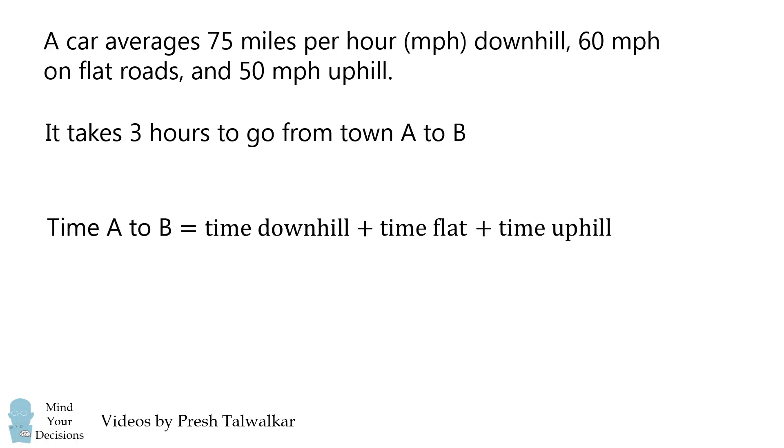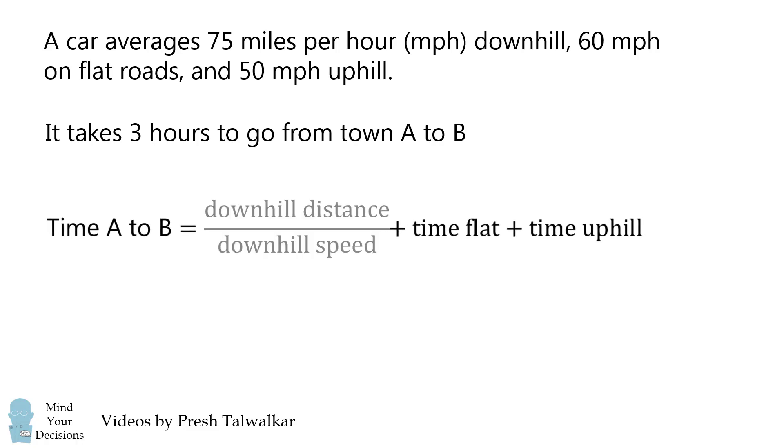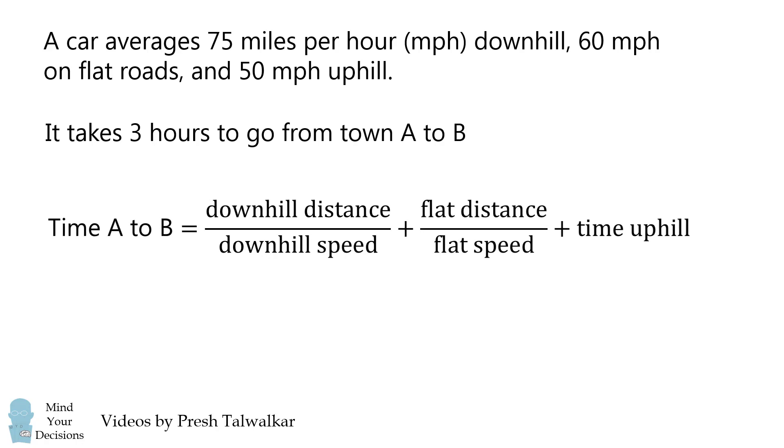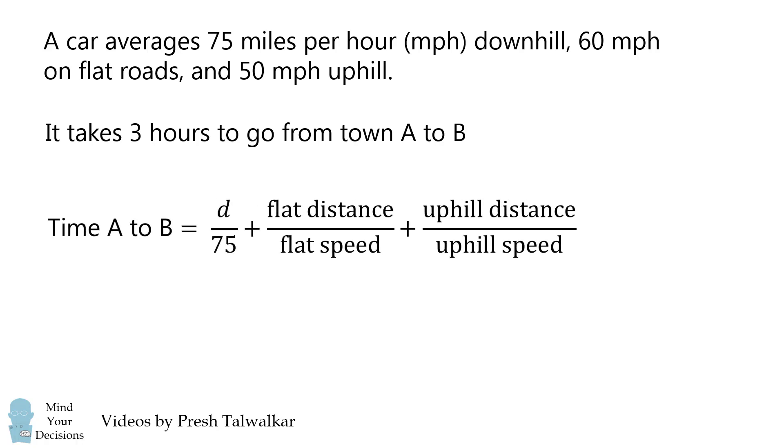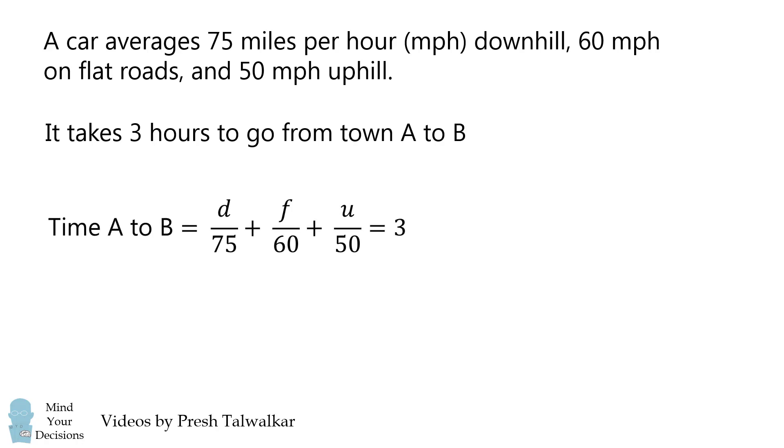We can express each of these times as the ratio of the distance divided by the speed. We can then substitute in the downhill, flat, and uphill speeds which are given in the problem, and we'll let the distances be denoted by unknown variables. We know this time from A to B is a total of three hours.